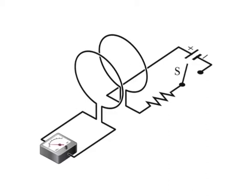Second experiment: we use the apparatus shown, with two conducting loops close to each other but not touching. If we close switch S to turn on a current in the right-hand loop, the meter suddenly and briefly registers an induced current in the left-hand loop. If we then open the switch, another sudden and brief induced current appears in the left-hand loop but in the opposite direction. We get an induced current and thus an induced EMF only when the current in the right-hand loop is changing — either turning on or turning off — and not when it is constant, even if it is large.